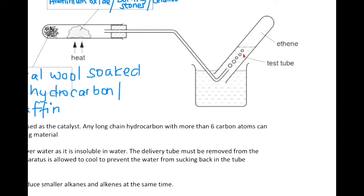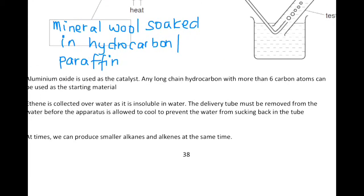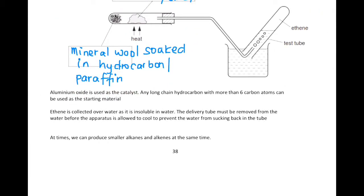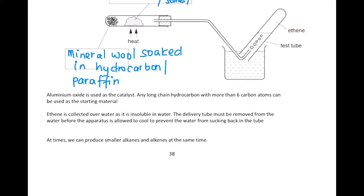The products are collected over water, as the gas displaces water into test tubes. Once a test tube is filled with gas, put a rubber bung on it and place another test tube to collect more. Aluminium oxide is the catalyst, any long hydrocarbon with more than six carbons can be used as starting material, and the alkanes and alkenes are collected over water because they are insoluble in it.